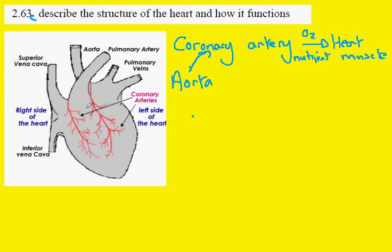The coronary artery can be seen in this diagram as the red blood vessels sweeping across the surface of the heart. These are branches of this blood vessel here, which is the aorta. These fine smaller arteries branch out of the aorta across the surface of the heart and then descend into the heart muscle, branching smaller and smaller, delivering oxygen and nutrients to the heart muscles.